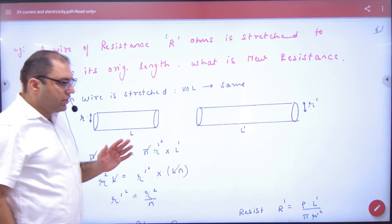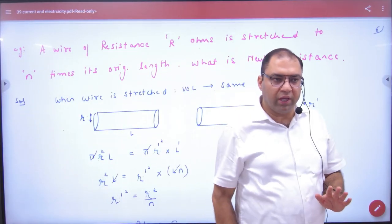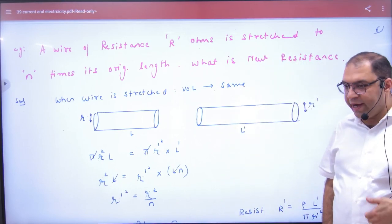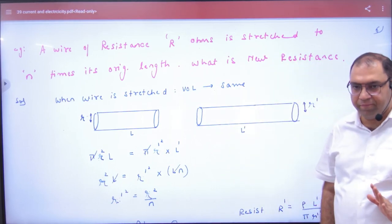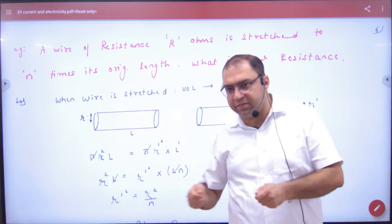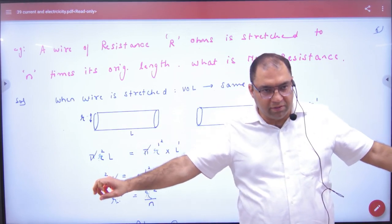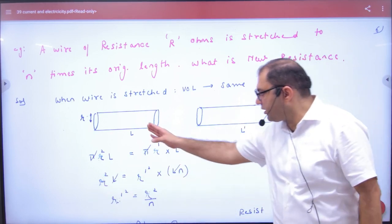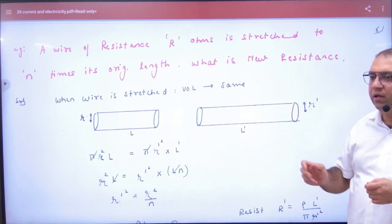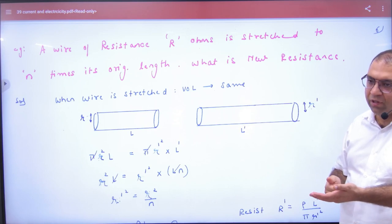A wire of resistance R₀ is stretched to n times its original length. There is a wire with length L and radius R. We have pulled it. How did it pull? It pulled and its length is n times. L' is n into L.